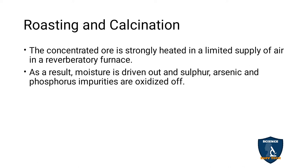Next is Roasting and Calcination. The concentrated ore is heated in a reverberatory furnace. While heating, the moisture of the ore is driven out, and sulfur, arsenic, and phosphorus impurities are also oxidized and removed.